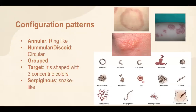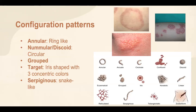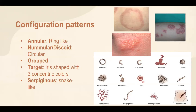Configuration patterns are different from distribution patterns. A distribution pattern is how lesions are distributed throughout the body — generalized, localized, or linear. The configuration pattern is how individual lesions are arranged. They could be annular or ring-like, for example in tinea corporis. They could be nummular or discoid, for example in nummular eczema. They could be grouped, such as grouped vesicles seen in herpes simplex infections. They could be target-shaped — iris-shaped with three concentric colors — as commonly seen in erythema multiforme. Or they could be serpiginous, which is snake-like.